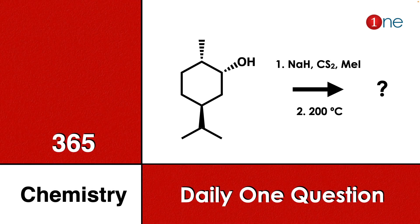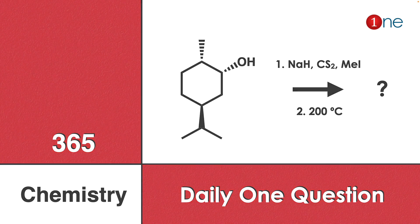Welcome to One Chemistry. This is the 365 Chemistry series — daily one question for you. Here, cyclohexane has a cis-alcohol and a trans-isopropyl group. You are reacting with sodium hydride, carbon disulfide, and methyl iodide, and then heating at high temperature. You have to find what will be the final product.